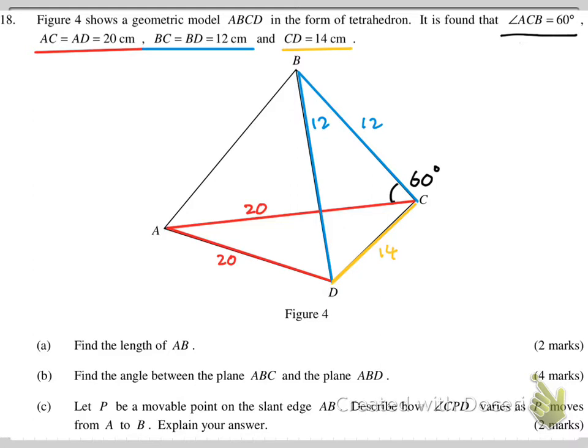First of all, we have to find the length of AB — this green line. To do that, we look at the focus triangle. AB lives on triangle ABC and also triangle ABD. We have the blue line and the red line, but we have no angle about ABD. But in triangle ABC, we have the green line, the blue line, the red line, and an extra angle — we know the 60 degrees. So we can start working on that triangle.